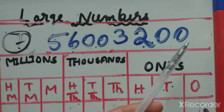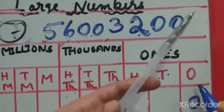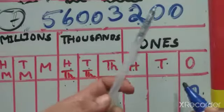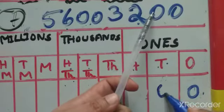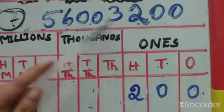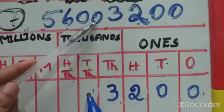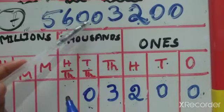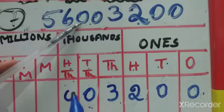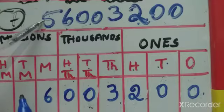We start from the ones place, or unit place, meaning the right side. The last digit 0 goes in the ones place. Then 0 in tens place, 2 in hundreds place, 3 in thousands place, 0 in ten-thousands place, and 0 in hundred-thousands place. 6 goes in the millions place.